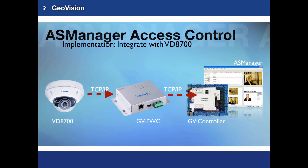To integrate VD8700 with AS Manager, GV FWC is needed to translate the recognition result to a card number. In this implementation, face data will be transferred to GV FWC after being recognized, and FWC will turn the data into a matched card number. Then FWC will send the card number via TCP/IP to the controller for verification.